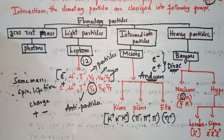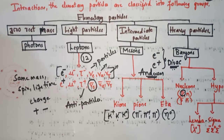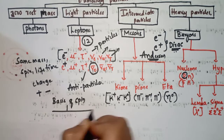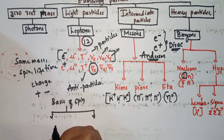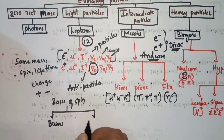Now let's look at another important topic: in these particles, which are bosons and which are fermions. To learn that, we classify elementary particles on the basis of spin. On the basis of spin, elementary particles are classified into two types: bosons and fermions. Bosons have zero or integral spin, whereas fermions have half-integral spin.